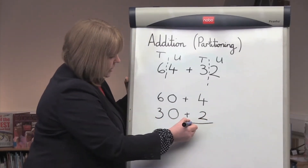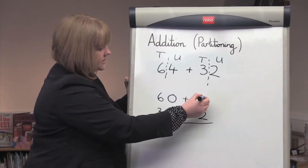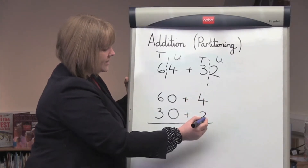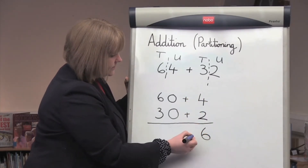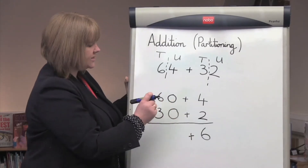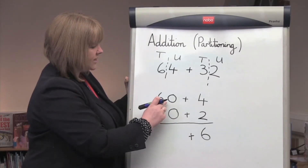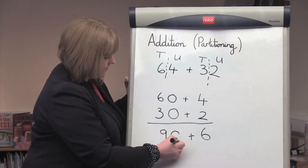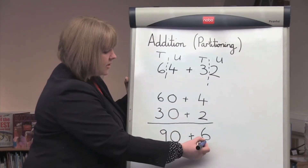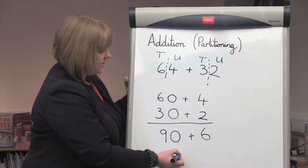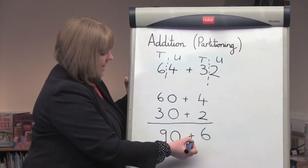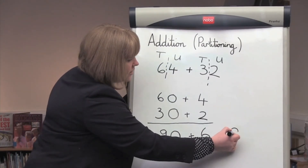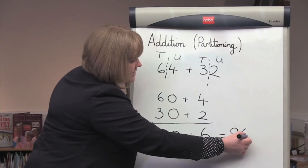And then what we do, we add, starting with the units column — 4 add 2 is 6. And then into the tens column, 60 add 30 is 90. And then we recombine these numbers together, so 90 add 6 gives us a final answer of 96.